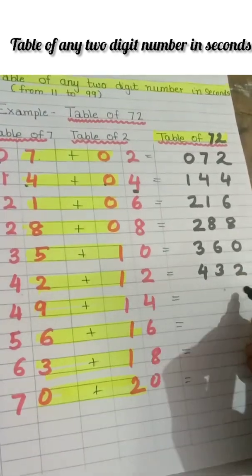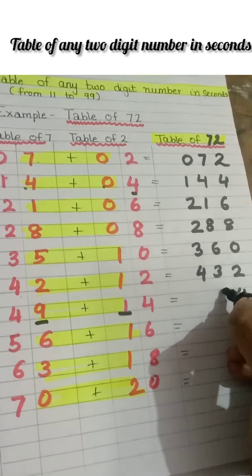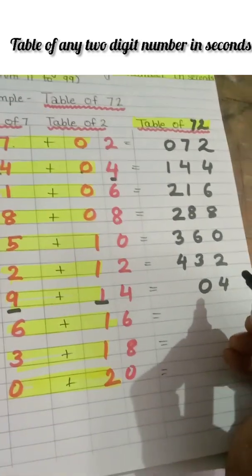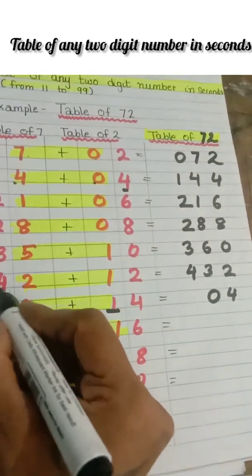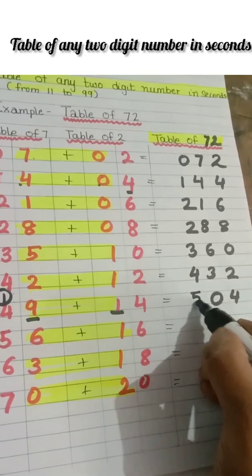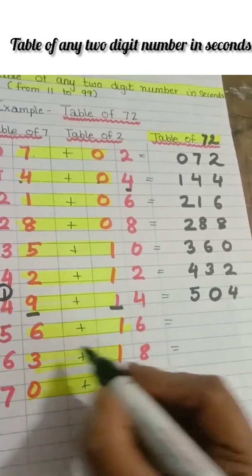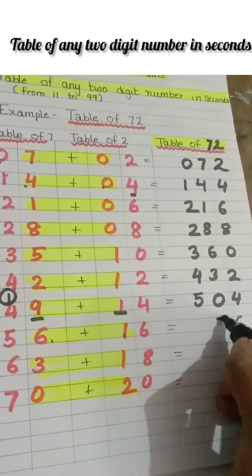Now 9 plus 1 is 10, but you will not write 10 here. Then what will you do? 1 you will give to 4, it will become 5. Then 6 plus 1 is 7 and 5.